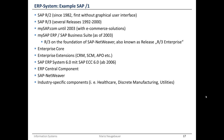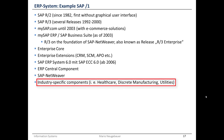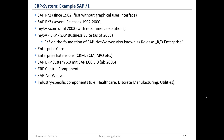Version 7 has integration tools like the NetWeaver. What is special about SAP is that there are many industry-specific components — for example, components for healthcare, for discrete manufacturing if you produce products in a discrete way, and for utilities companies providing electricity or water to consumers or businesses.